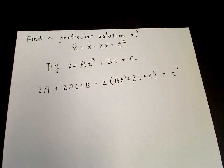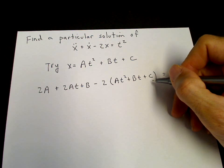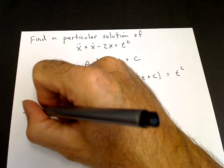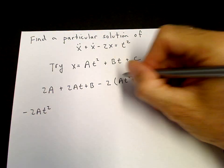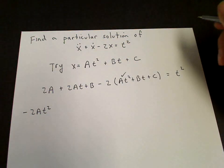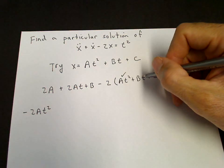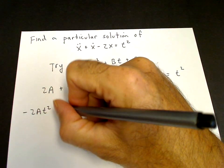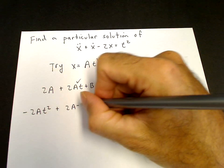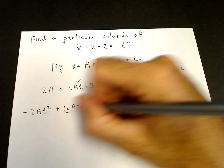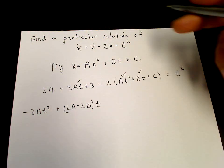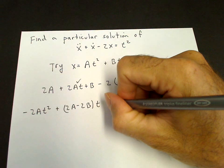And we can collect the terms to write this as a polynomial. So we have a minus 2At squared term from here. The t terms, we have (2A minus 2B) times t. And the constant term, we have 2A plus B minus 2C.